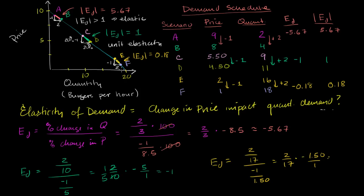Finally, going all the way down to the region between E and F, our prices are quite low — the average base is about $1.50 — so $1 over $1.50 is a huge 67% change in price. But now our quantity is much larger, so a 2-unit increase isn't that large a change in quantity. You have a smaller percent change in quantity over a large percent change in price, meaning you're relatively inelastic. When the magnitude of elasticity of demand is less than one, we call that inelastic.